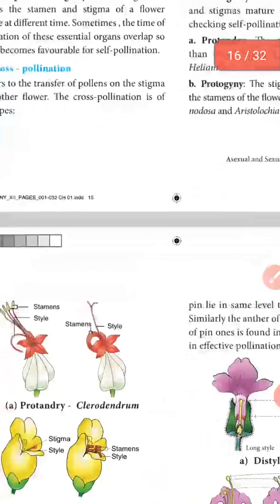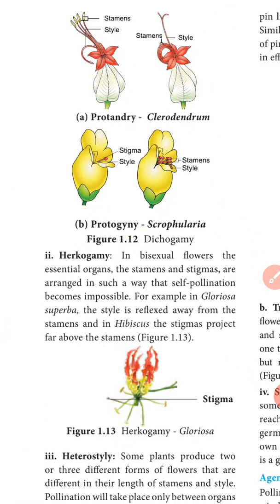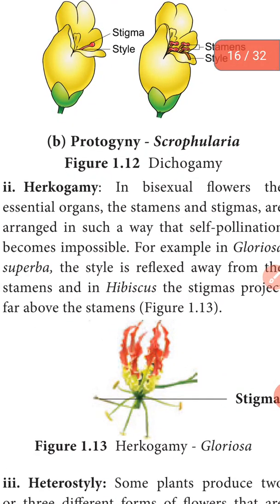The third one is hercogamy. In hercogamy, in bisexual flowers, the essential organs — both stamen and stigma — are arranged in a way so that self-pollination is impossible. Their arrangement prevents self-pollination, so cross-pollination must occur. Example: Gloriosa superba — the style is reflexed away from the stamen.